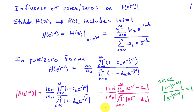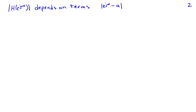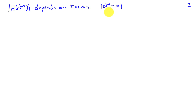This is a very useful form in which to study the relationship between the frequency response and the poles and zeros of the system. What we see is that the magnitude of the frequency response depends on terms of the type e^{jω} minus a zero in the numerator, and e^{jω} minus a pole in the denominator. So if we understand how this term behaves, we can characterize the entire magnitude response of the system.